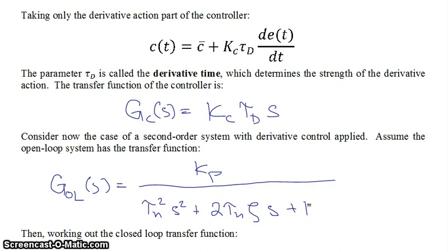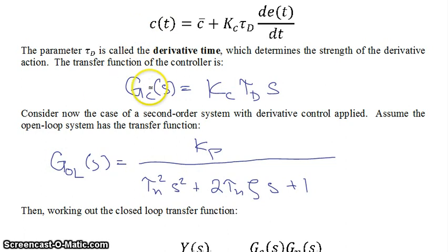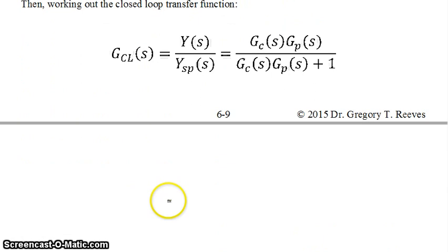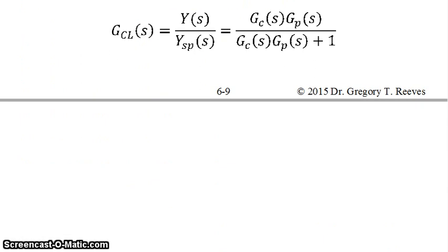So then, working out the closed-loop transfer function with keeping our gc and our g process open-loop in mind, it looks like the following. So you have g closed-loop as a function of s is equal to kc tau d times s, that's our controller transfer function, times kp all divided by tau n squared s squared plus 2 tau n zeta s plus 1.